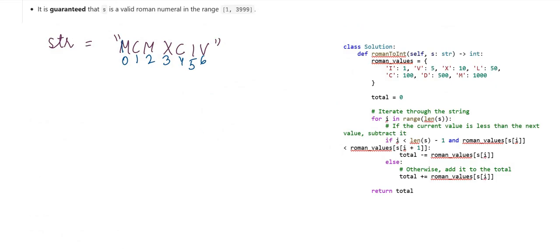Let's say this string is given to us and we have to convert it to integer. What we can do is we can make a dictionary where we are storing all the Roman values. And I told you if something towards the left is present with the lower value, I will subtract. Otherwise add.